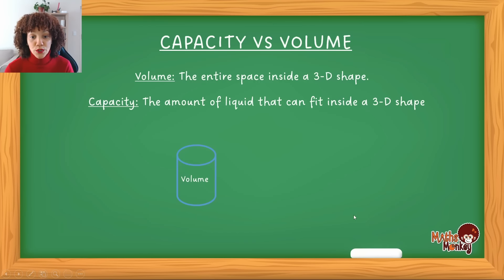So an example of what this would look like is if you look at that, volume is the entire space inside and then capacity is essentially how much liquid can fit inside that shape. So make sure that you're clear on these definitions.